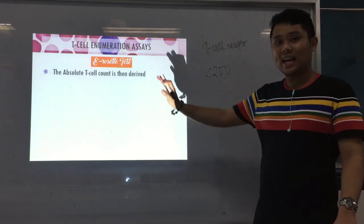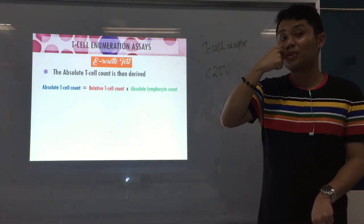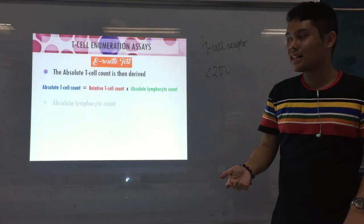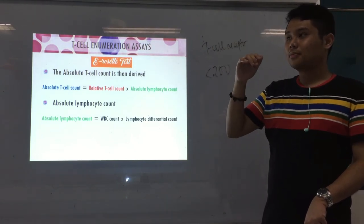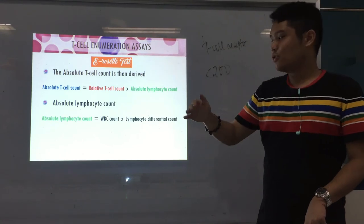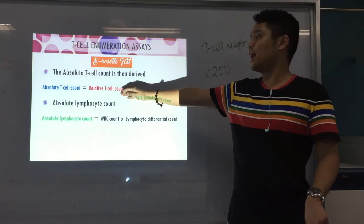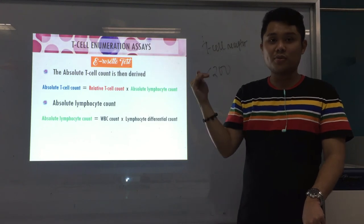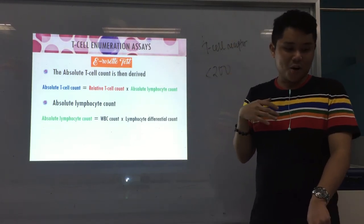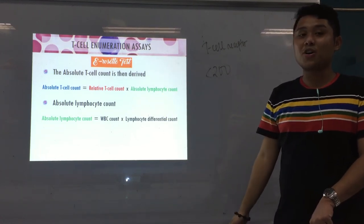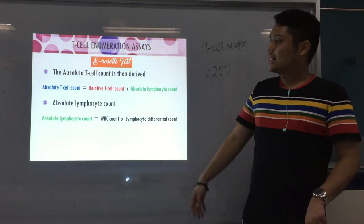For the E-Rosette test, we also get the absolute T-cell count by multiplying the relative T-cell count by the absolute lymphocyte count. The absolute lymphocyte count is obtained by multiplying the WBC count by the lymphocyte differential count. That's the E-Rosette test — a historical method, now quite obsolete and replaced by flow cytometry.